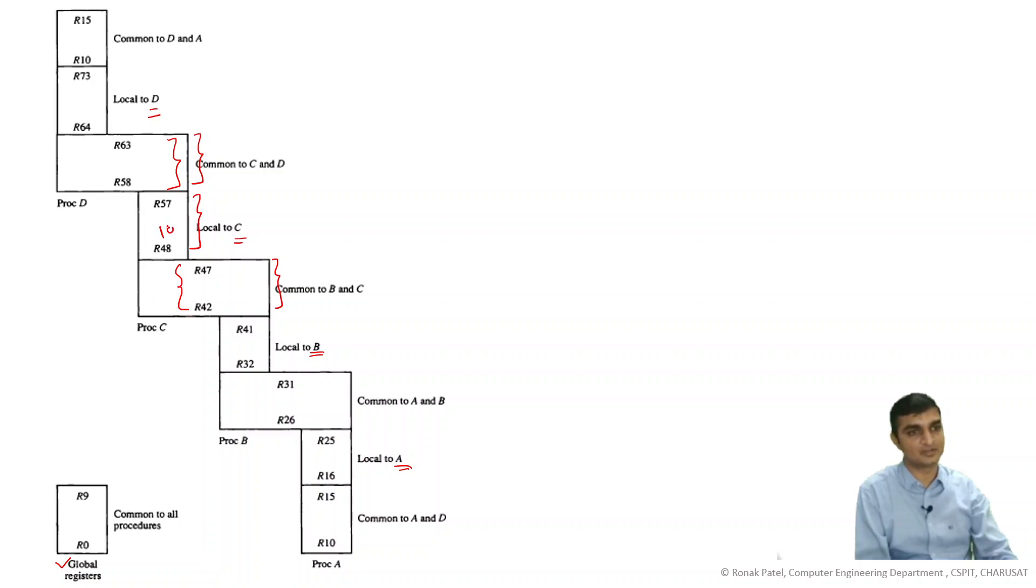I think six common registers here on adjacent sides. So these are registers and some local registers, around 10. So this is process C, this is process B, this is A and D, and this is in circular fashion.